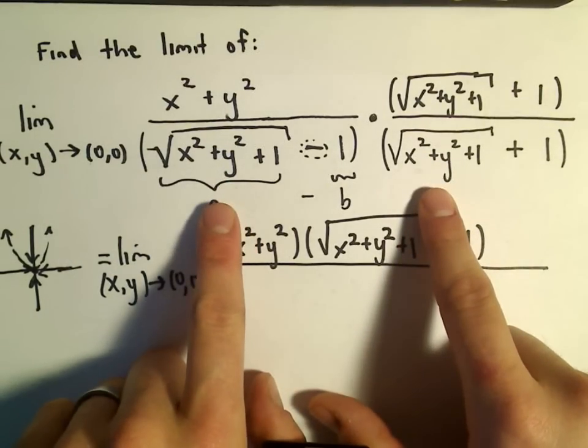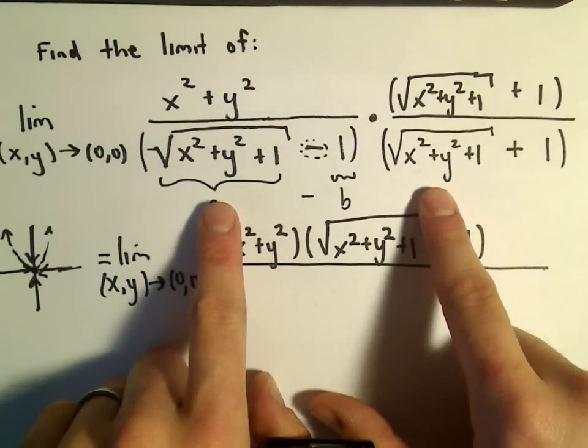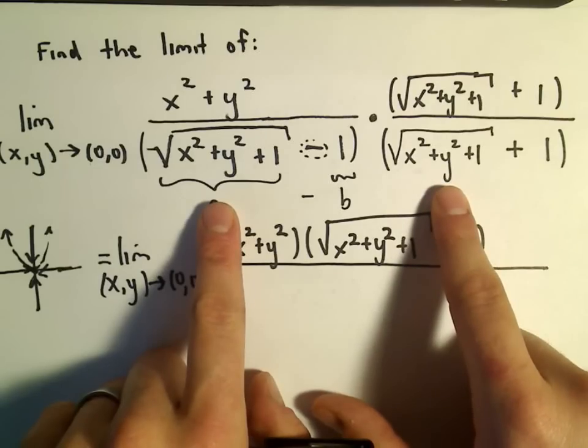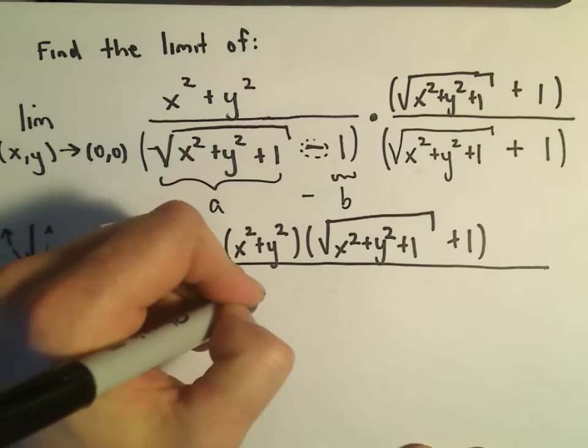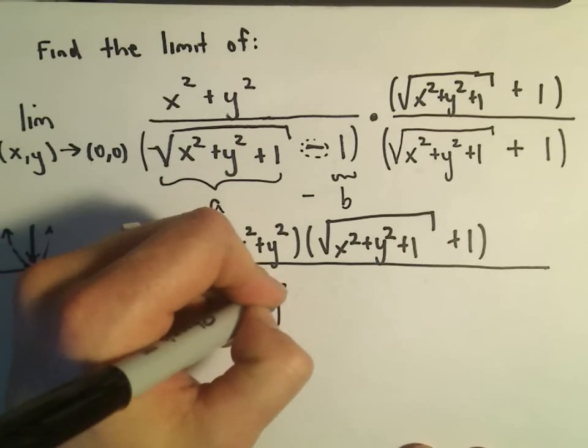If you take the square root of x squared plus y squared plus 1 and we multiply that by the square root of x squared plus y squared plus 1, all that just cancels and we get x squared plus y squared plus 1.